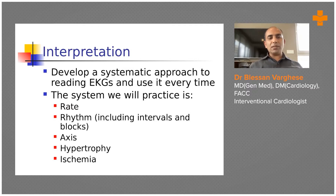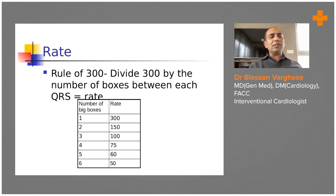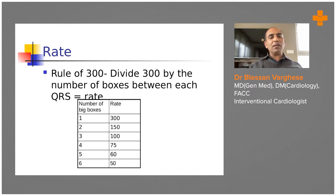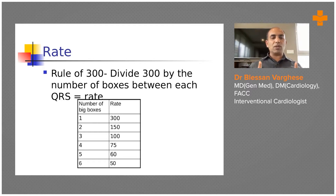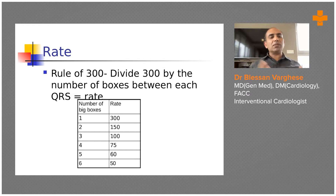Look at the ECG in the following systematic way: rate, rhythm, axis, hypertrophy, and ischemia. For rate, the easiest method is the Rule of 300 — divide 300 by the number of big boxes between two QRS complexes. When we say QRS complexes, it's the R wave you count. So you count the big boxes between two R waves.